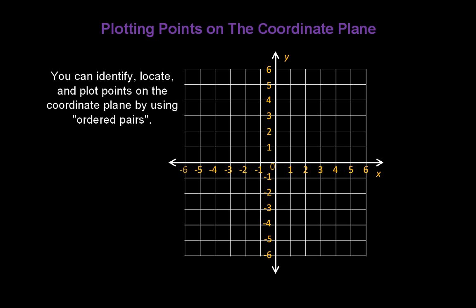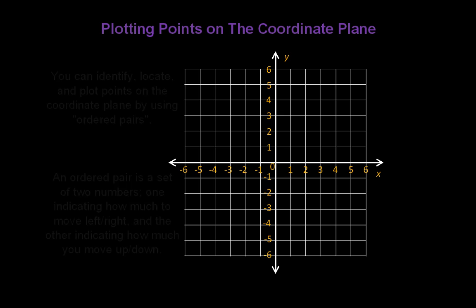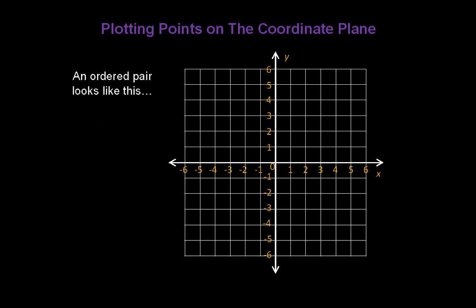You can identify, locate, and plot points on the coordinate plane by using ordered pairs. An ordered pair is a set of two numbers, one indicating how much we move left or right, and the other indicating how much you move up or down. An ordered pair looks like this: two numbers, separated by a comma, inside a pair of parentheses.